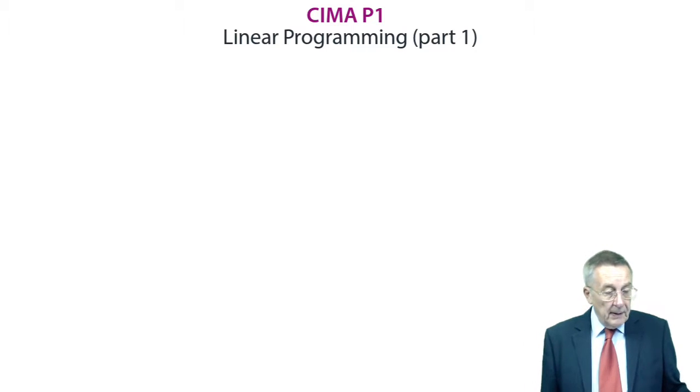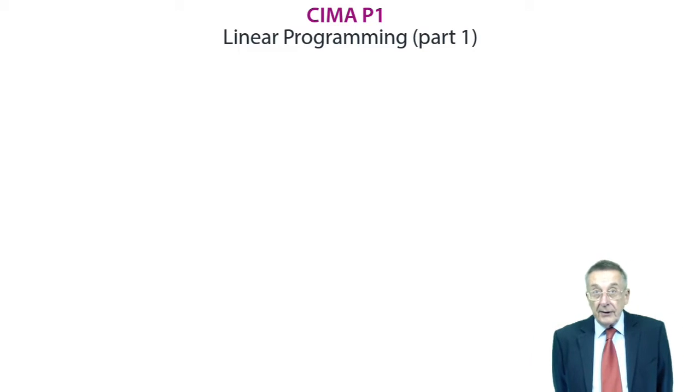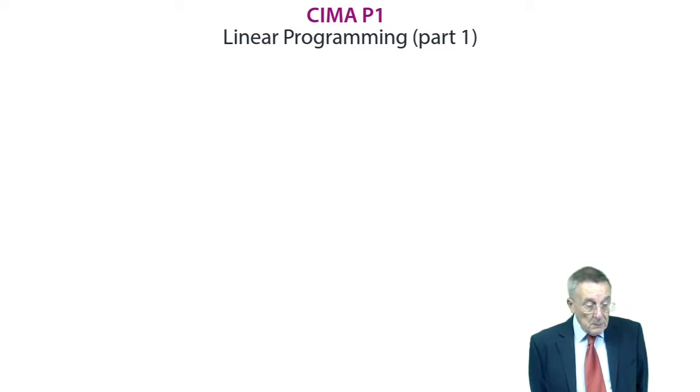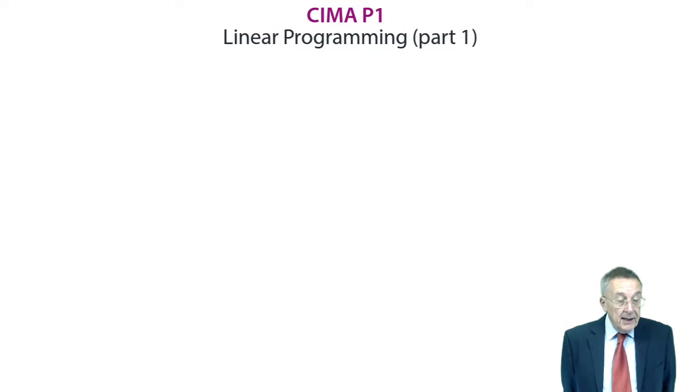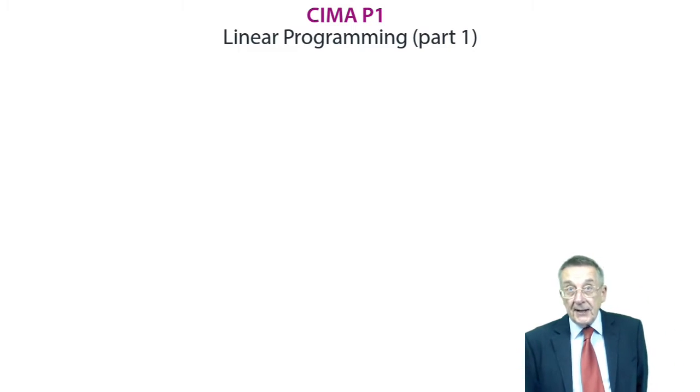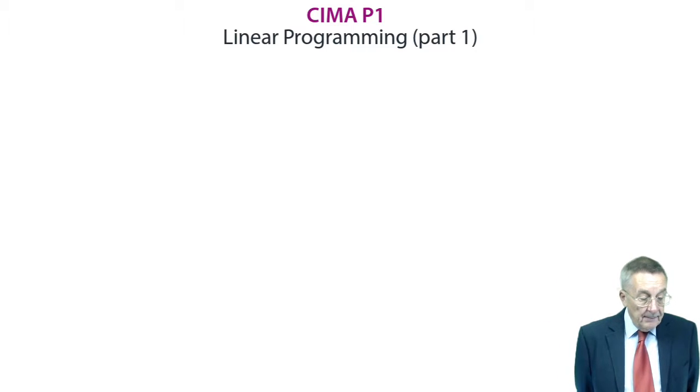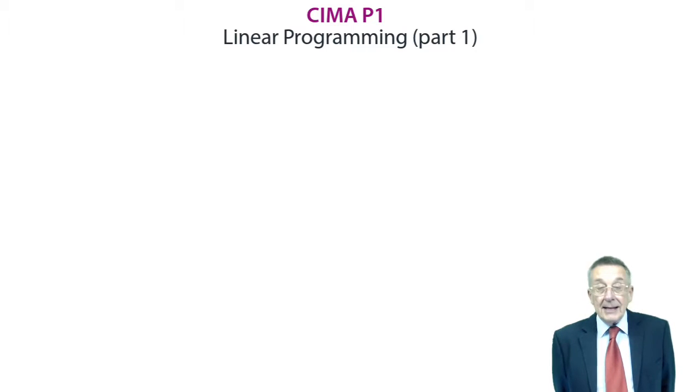And to show you the sort of problem we're faced with, and how we go about solving it, can you look at exercise one on the first page of the chapter? I have a quick read with me. It says Peter makes two types of chairs, the executive and the standard. The data related to each is as follows. Well, you can see standard uses two kilos of material and executive uses four kilos. Labour, standard takes five hours of labour, six hours for an executive.